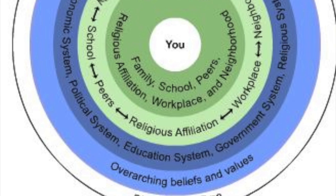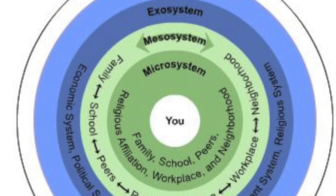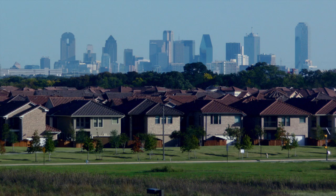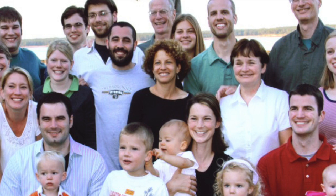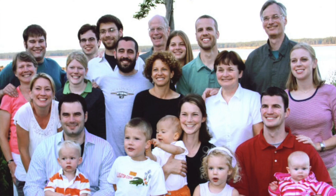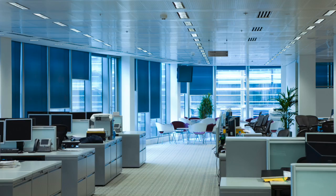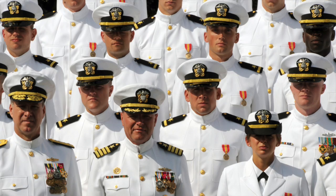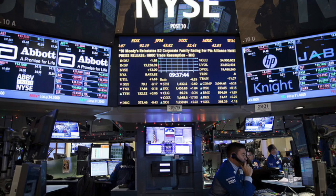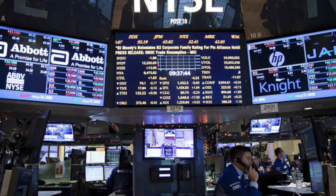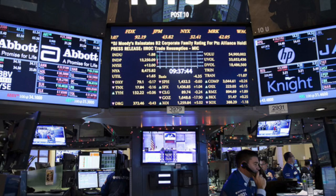The next stage in Bronfenbrenner's ecological model is the exosystem. This stage encompasses parts of a child's life that they may not directly interact with but which still affect them. A child's neighborhood and city affect how they are raised and who they know. A child's extended family has a big impact upon them even though they may not see each other very often — they can still impact the family's culture and habits. The child's parent's workplace has an effect as well. If a parent gets a promotion or is laid off, it will impact the family's financial situation. Another example would be if the child's parents are in the military — they might move often or a parent may be deployed overseas.